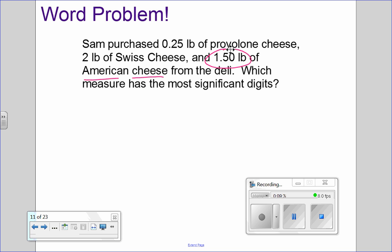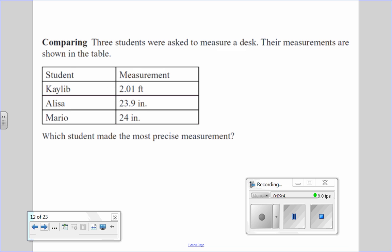Which student in this chart made the most precise measurement when asked to measure their desk? Yeah, I'd go with Elisa. Elisa, she not only has three significant digits, but she used inches when Caleb used feet. So I would definitely go with Elisa. You're looking at the digits being the smallest.